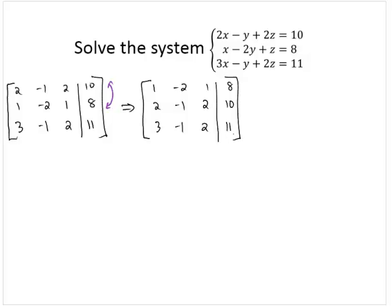So now I'm going to leave row 1 alone. I'm going to focus now on the 2 and the 3. I want to make those 0's. So I've got the 1 in the corner. Now I need to make the elements below it 0's. I'm going to do this through a combination of addition and subtraction.